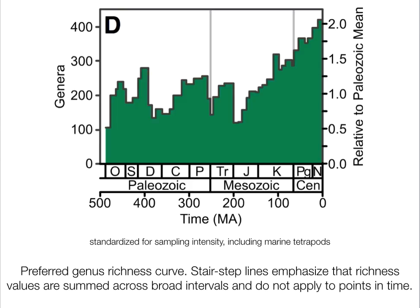Here we can see the End-Ordovician extinction is quite clear, the End-Devonian extinction is quite clear, the P-T, the Triassic-Jurassic, and the K-Pg are all visible — although the K-Pg is actually quite small. But perhaps most interestingly, there is a notable rise in diversity from the Mesozoic to the Cenozoic.